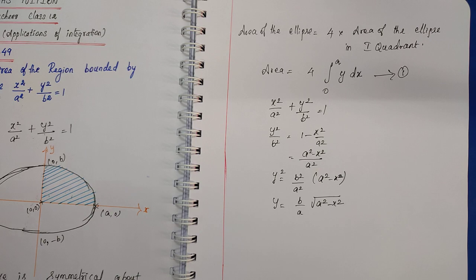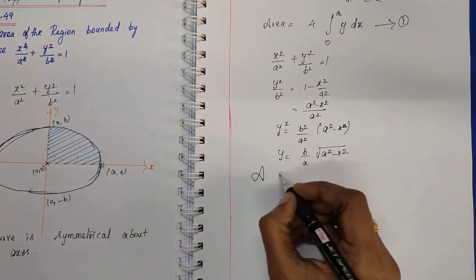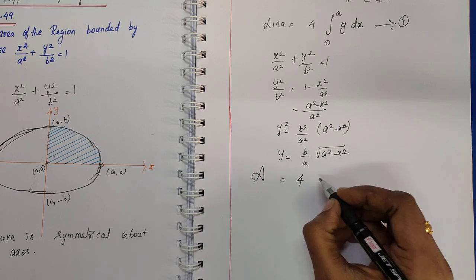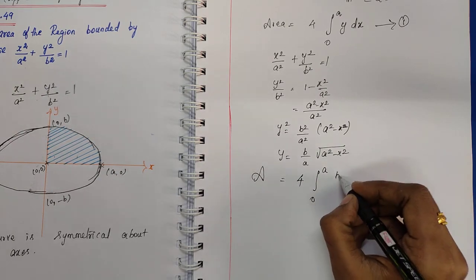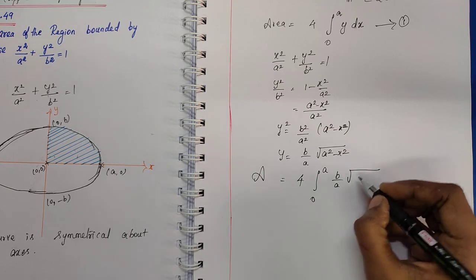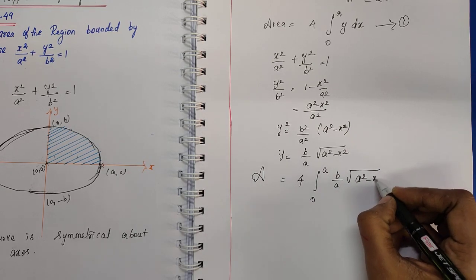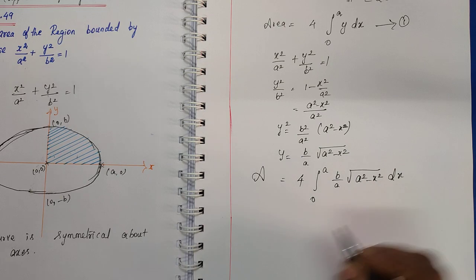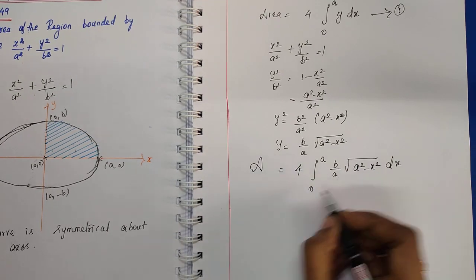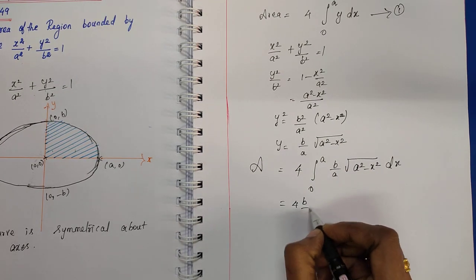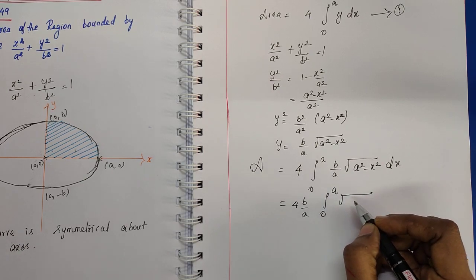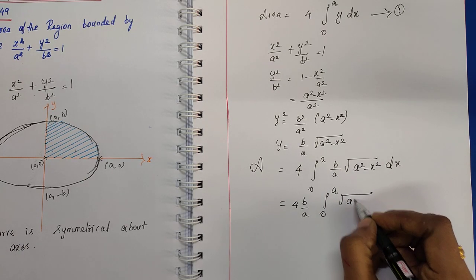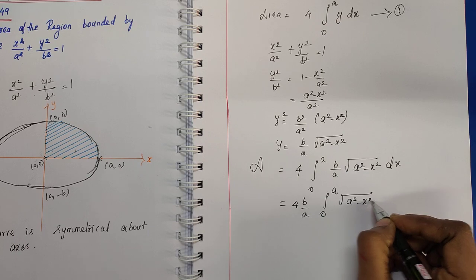Substituting equation 1 into the area formula: Area = 4 × ∫₀ᵃ (b/a)√(a² − x²) dx. Since b/a is a constant, it can be taken outside the integral: Area = 4(b/a) × ∫₀ᵃ √(a² − x²) dx.